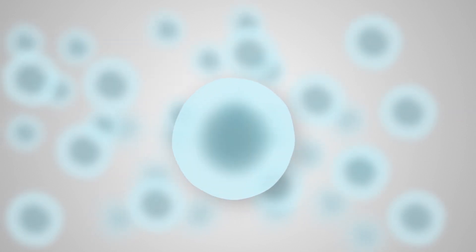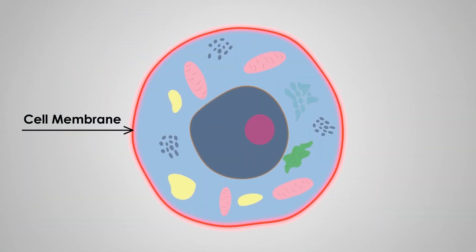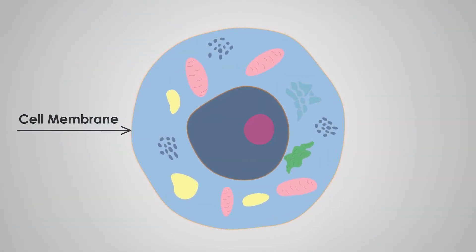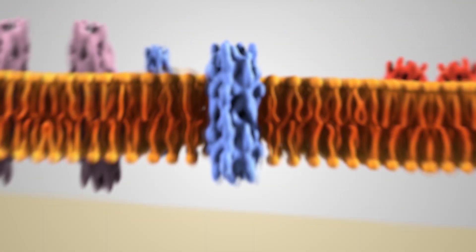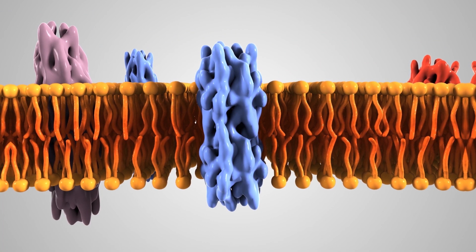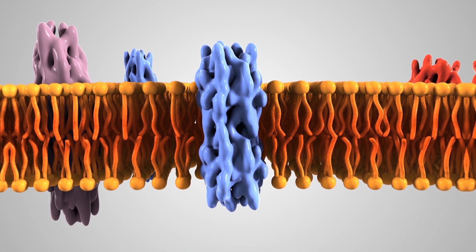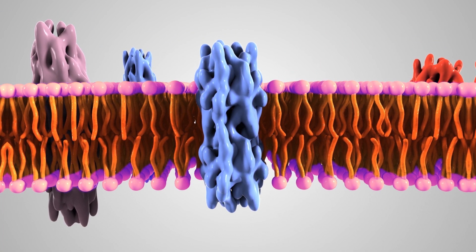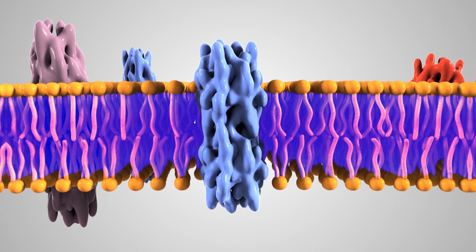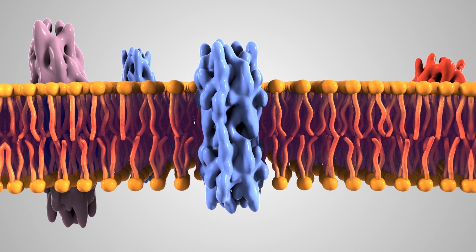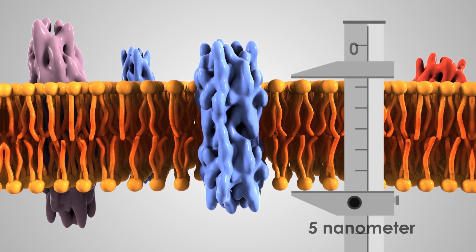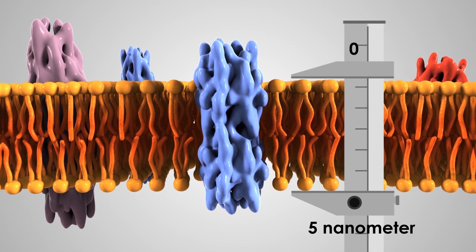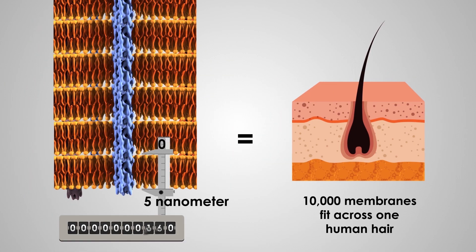The cells of every living organism are surrounded by membranes, consisting of opposing phospholipid pairs forming bilayers. Their surfaces are charged and the middle is oily, forming a laminate. Cell membranes are thin, yet amazingly strong.